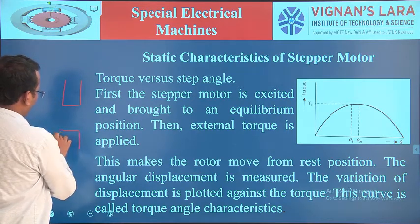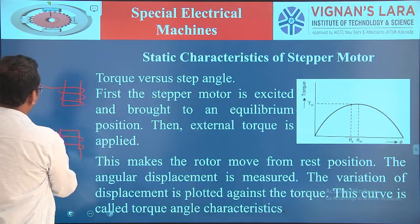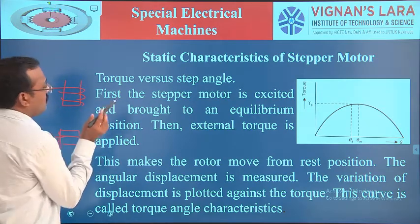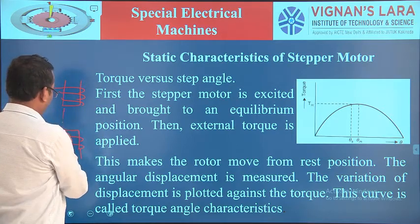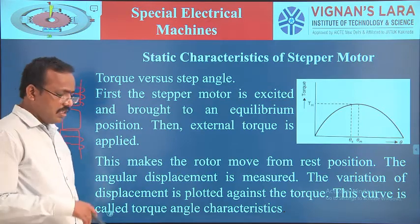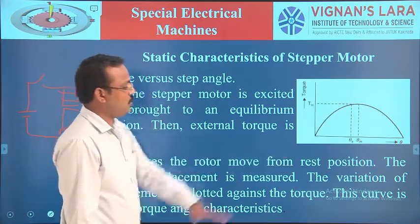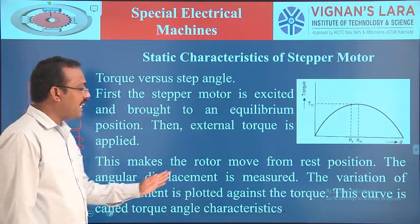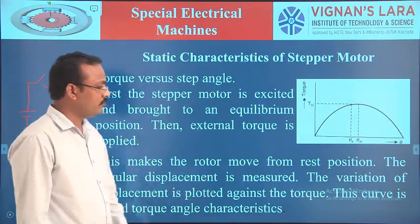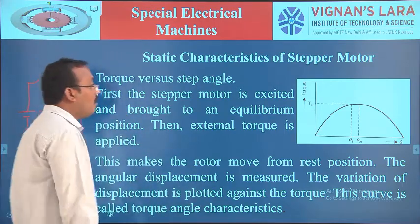This is the state of operation — these are the gating pulses or switching pulses. Once the motor is at equilibrium position, we apply external pulses to cause further movement. The rotor moves from that position and the angular displacement is measured. The variation of displacement is plotted against torque. This curve is called the torque-angle characteristic.